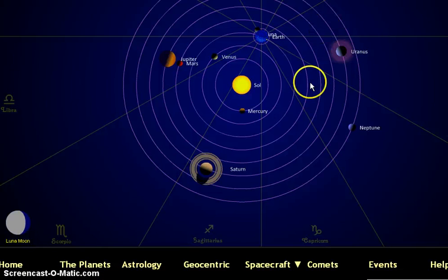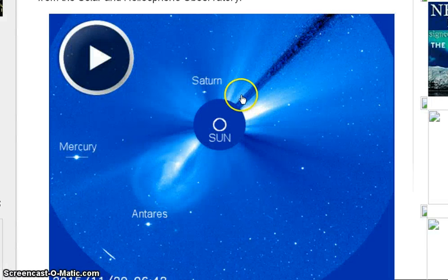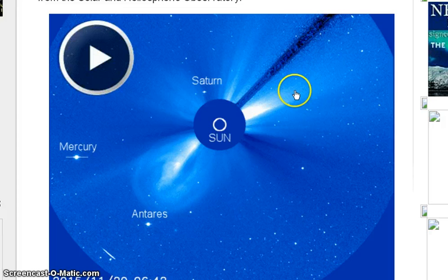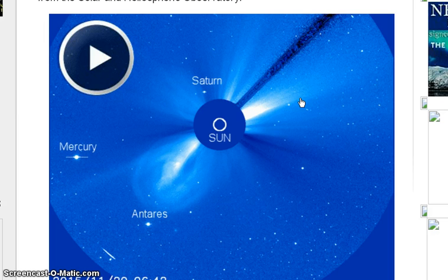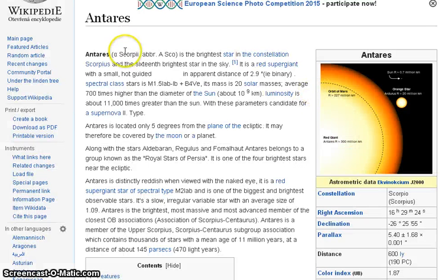I'm switching again. Saturn, Mercury—Sagittarius constellation is here on this side, Scorpio, which means from Saturn on the right side, is Scorpio constellation. On Wikipedia, Antares is the brightest star in the constellation of Scorpio.